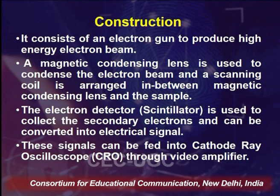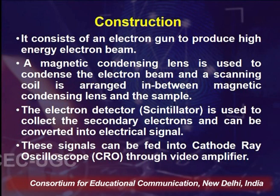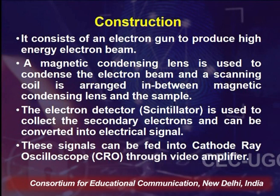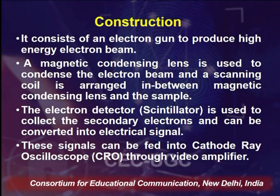TEM can be used for thin section samples; SEM for samples that are thicker in nature. SEM uses a finely focused beam of electrons to produce a high-resolution 3D image of the sample structure. It consists of an electron gun to produce a high-energy electron beam; a magnetic condensing lens to condense the beam; and a scanning coil arranged between the condensing lens and the sample. The electron detector (also known as a scintillator) collects secondary electrons and converts them into electronic signals, which are amplified by a video amplifier and fed to the CRO (cathode ray oscilloscope).